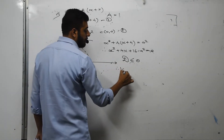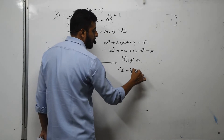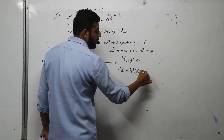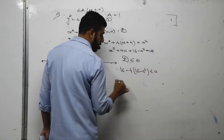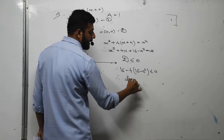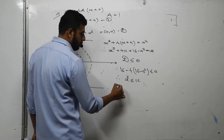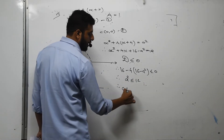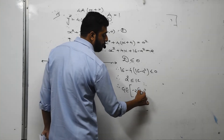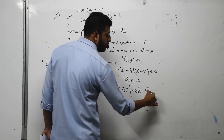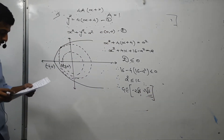Delta equals zero means the circle and parabola are touching; delta less than zero means no intersection. Computing B squared minus 4AC: 16 minus 4(1)(16 minus A squared) less than or equal to zero, giving A squared less than or equal to 12. Therefore A belongs to the interval (minus 2 root 3, 2 root 3), and the answer is 2 root 3.